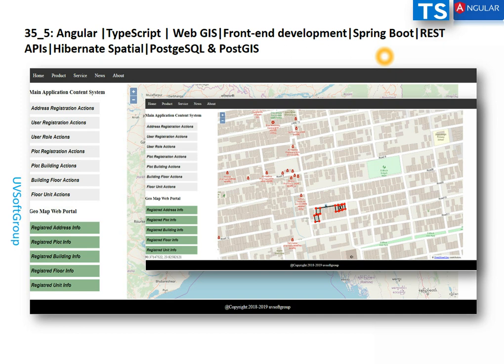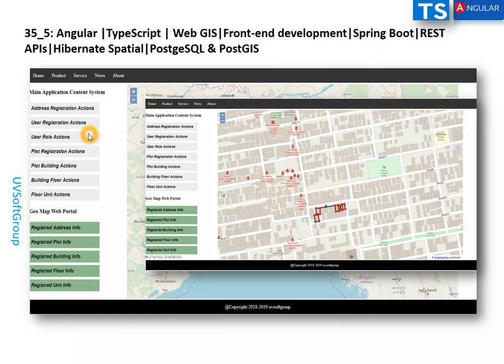The microservices are already in place; you need to call them based on your use cases and build your frontend with Angular and TypeScript. This is the initial layout for the complete application. The address registration actions cover the full CRUD operations — Create, Read, Update, and Delete — which are already defined in the respective microservices or REST APIs.